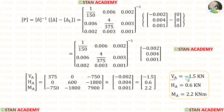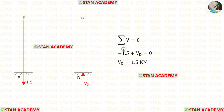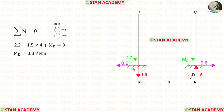For VA, we got a negative value, meaning our assumption was incorrect — we assumed VA acts upwards, but it actually acts downwards. Applying ΣH = 0 gives HD, and ΣV = 0 gives VD. Taking moments about D and assuming MD acts clockwise, we find MD is positive, confirming our assumption that MD acts in the clockwise direction.